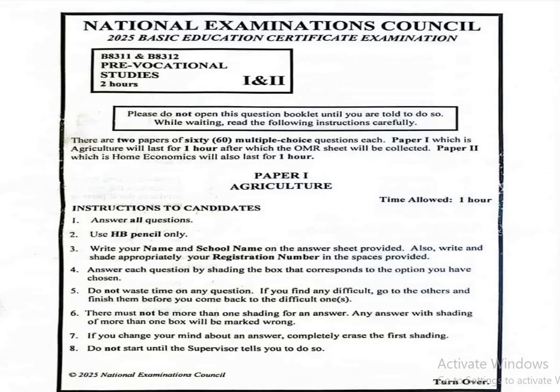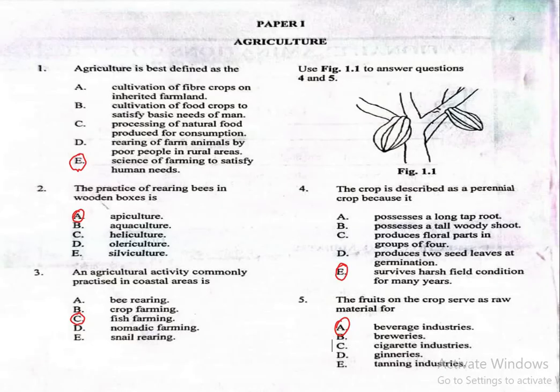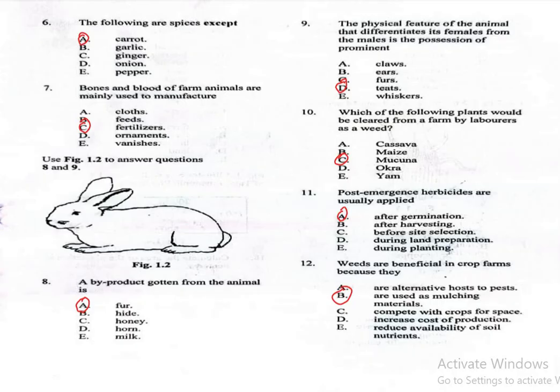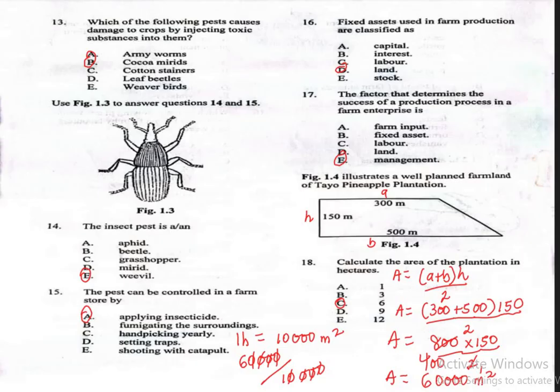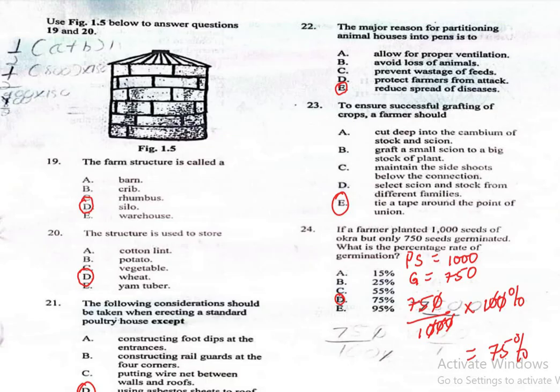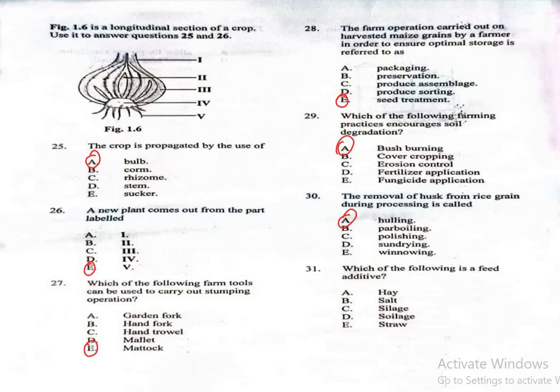You are welcome to today's lesson. We are looking at Pre-Vocational Studies, Paper 1, Agriculture. In the previous lesson, I looked at questions 1 to 30. For today's lesson, we are going to look at questions 31 to 60 and will be done with Agriculture. Let's go straight to question 31.